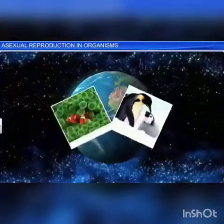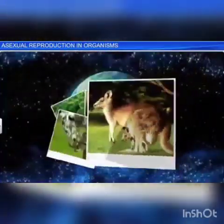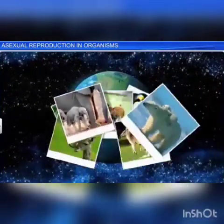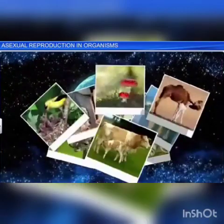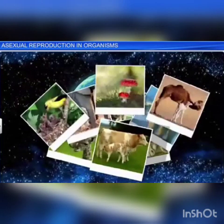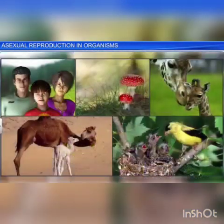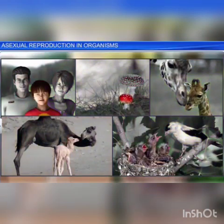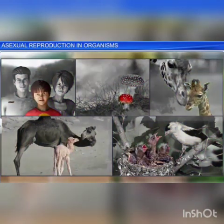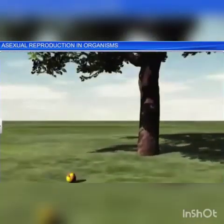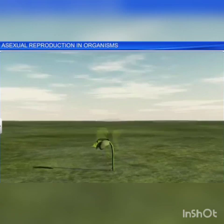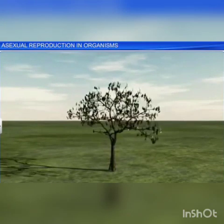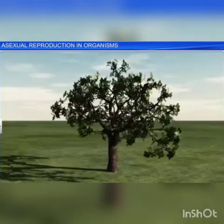Our earth is home to countless plant and animal species, all of which have a limited life span and are bound to die. Yet these species have existed for several thousands of years. That's because living organisms can reproduce — they give rise to offspring, which in turn grow and reproduce their own offspring of the same kind. This ensures survival of the species generation after generation.